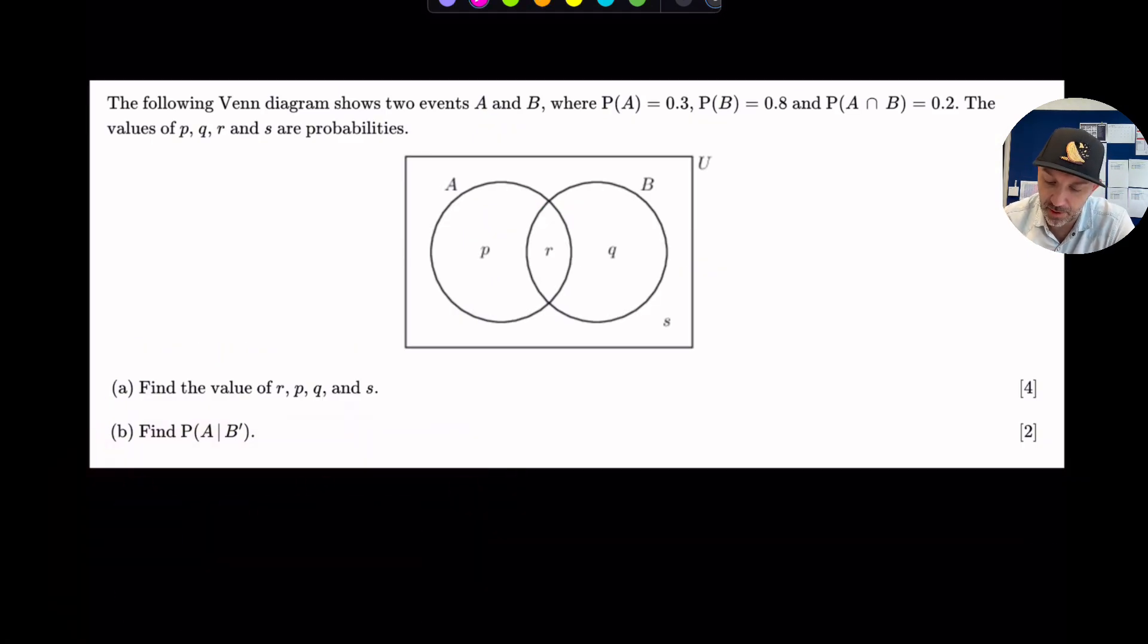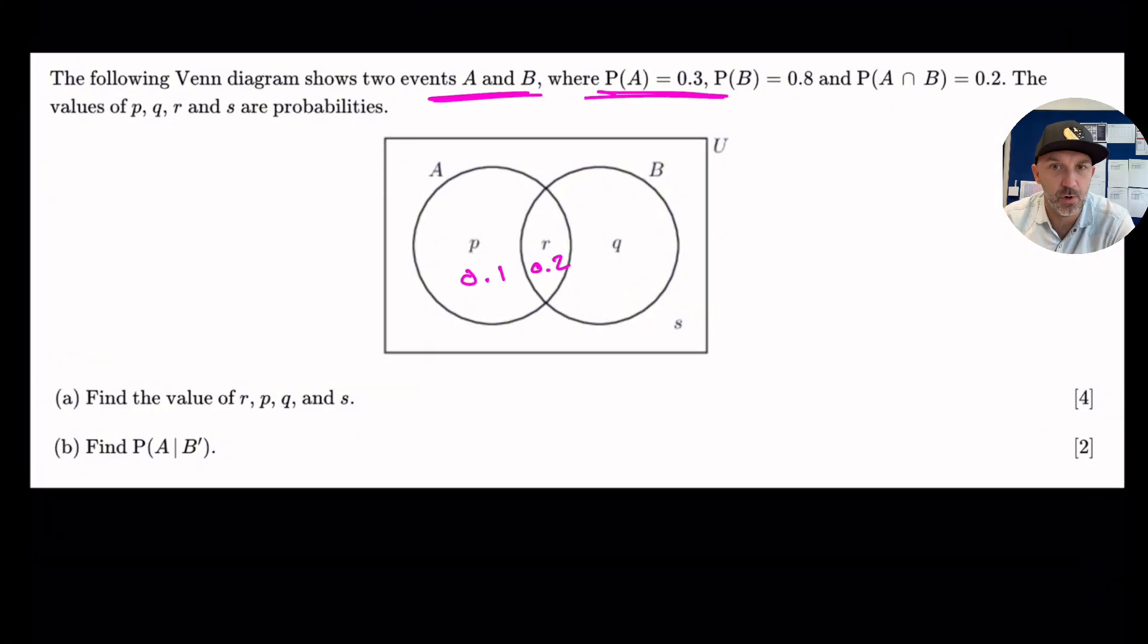Okay. Following Venn diagram shows two events A and B where the probability of A is 0.3, B is 0.6, and the intersection is 0.2. So we're going to put the intersection on. That means that that will be 0.1. Probability of B is 0.8. So that means it's 0.6. If we add those together, 6, 7, 8, 9, that is 0.1 then on the exterior.